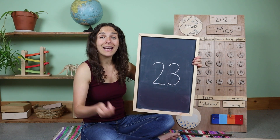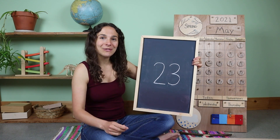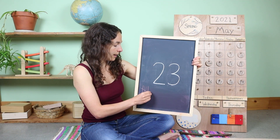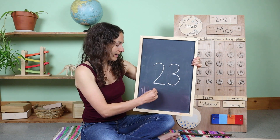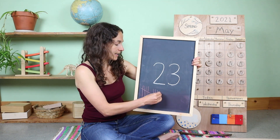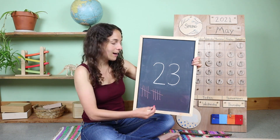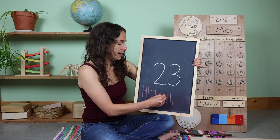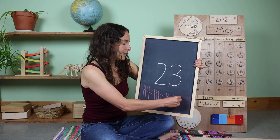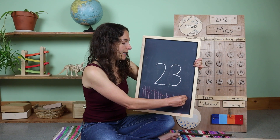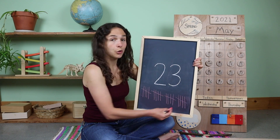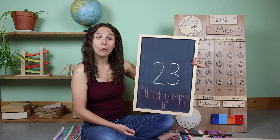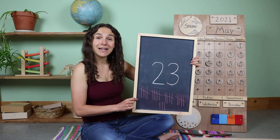Are you ready? 1, 2, 3, 4, 5 goes across. 6, 7, 8, 9, 10 goes across. 11, 12, 13, 14, 15 goes across. 16, 17, 18, 19, 20 goes across. 21, 22, and one more makes 23. 23 tally marks.